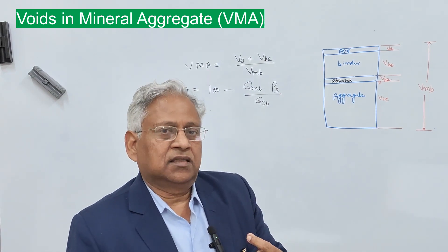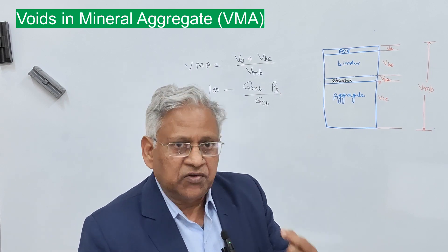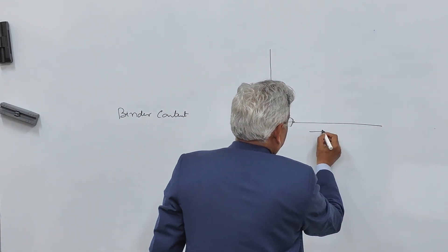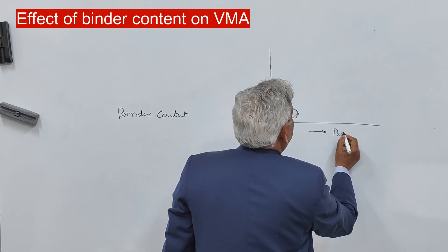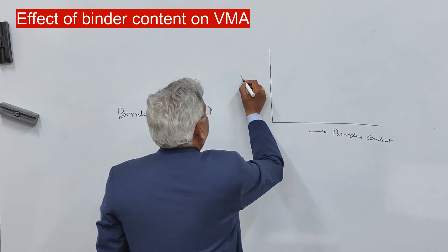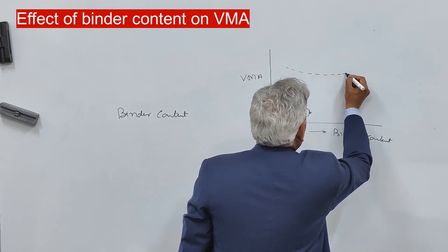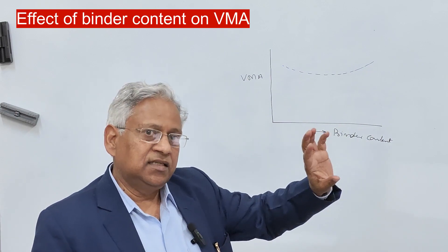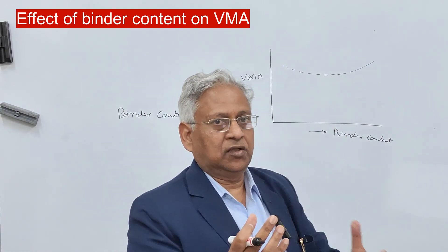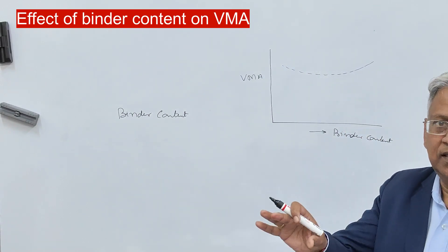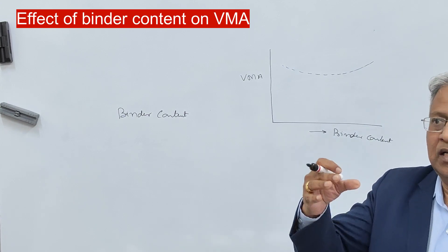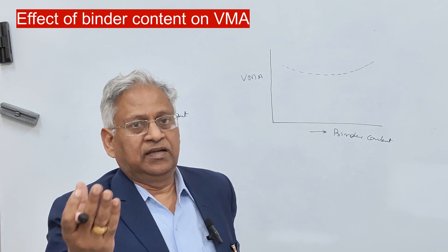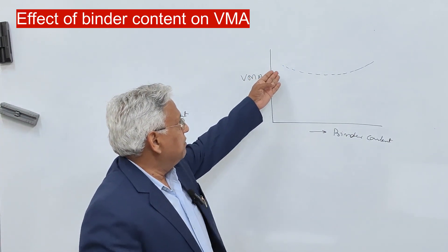There are certain factors which influence VMA very substantially. One of them is binder content. VMA changes with binder content in a U-shaped curve — the reverse of what you get for density versus binder content. When you add bitumen to the aggregate mixture, it provides lubricity, and because of this lubrication effect, you can compact it into a lesser volume. When volume reduces, density increases; when density increases, air voids reduce. That is how VMA reduces with binder content.